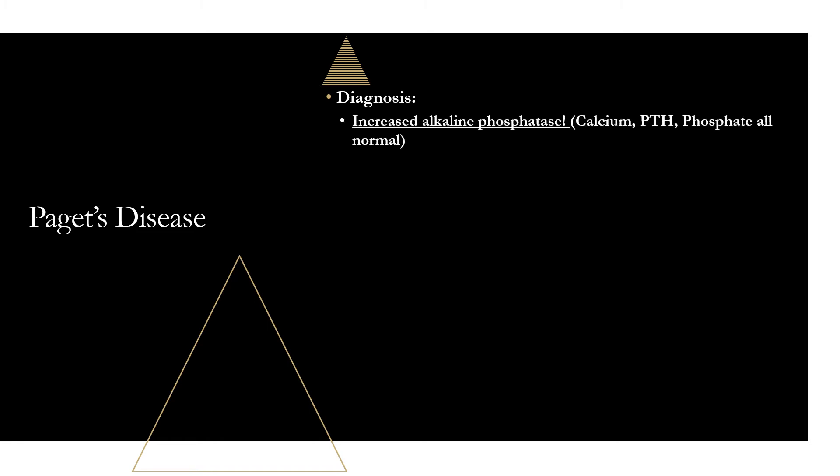Diagnosis is pretty straightforward — labs and x-rays. Labs show increased alkaline phosphatase; everything else — calcium, PTH, phosphate — is going to be normal. This is due to increased osteoblastic activity, as alkaline phosphatase is attached to osteoblasts and released during that activity.